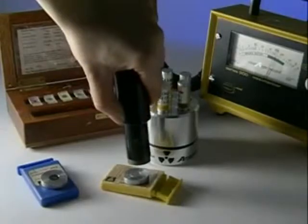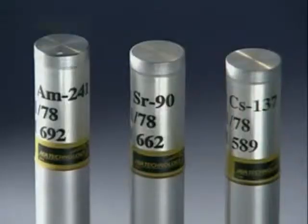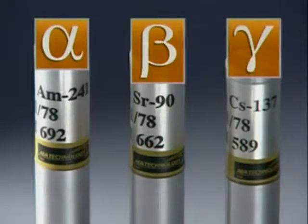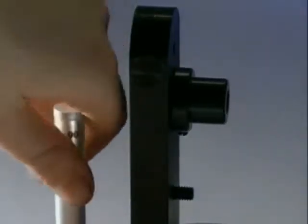There are three different types of nuclear radiation: alpha, beta and gamma. Each has a different penetrating power.